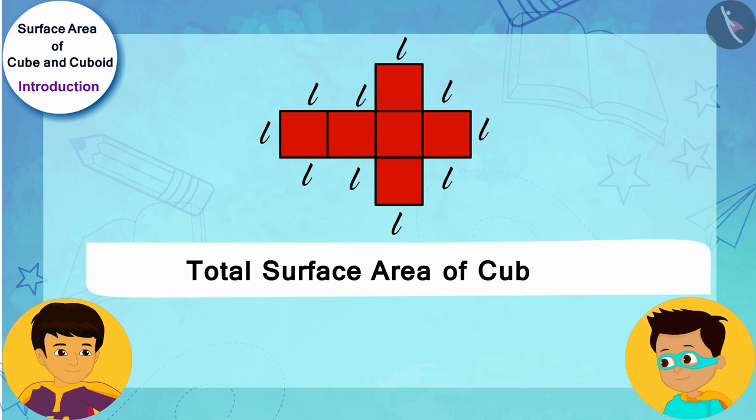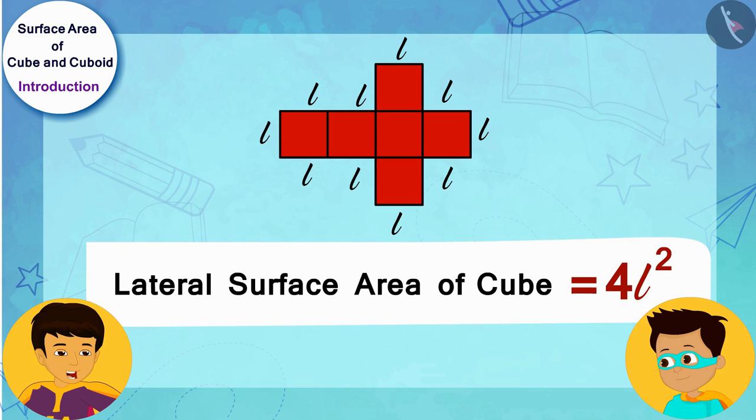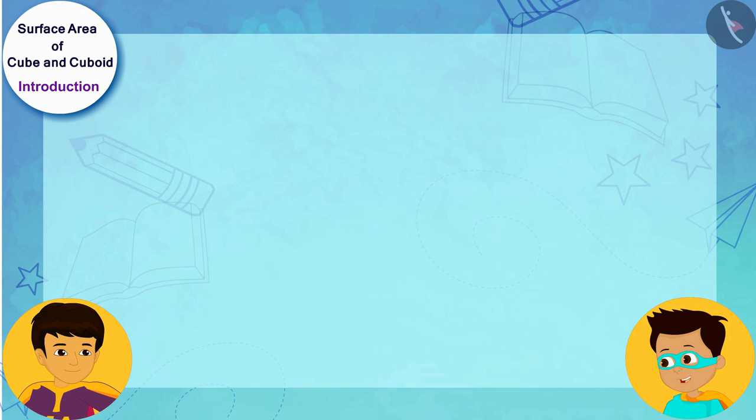And to find the lateral surface area of a cube, we can find the area of any one of its sides, L squared, and we will multiply it by 4. Absolutely right!